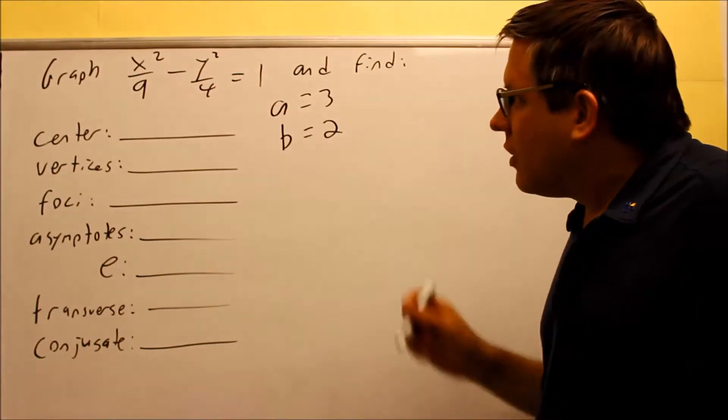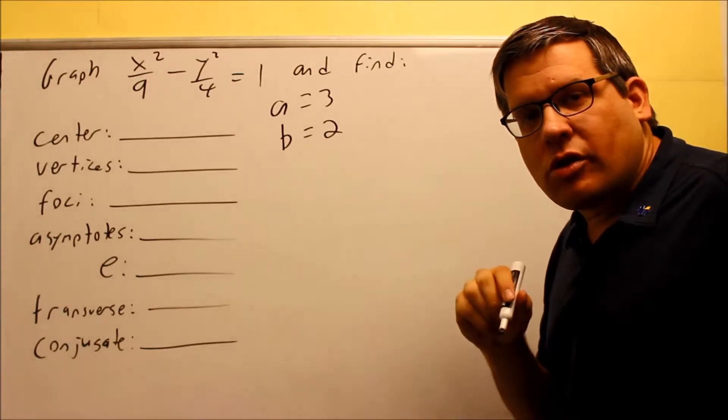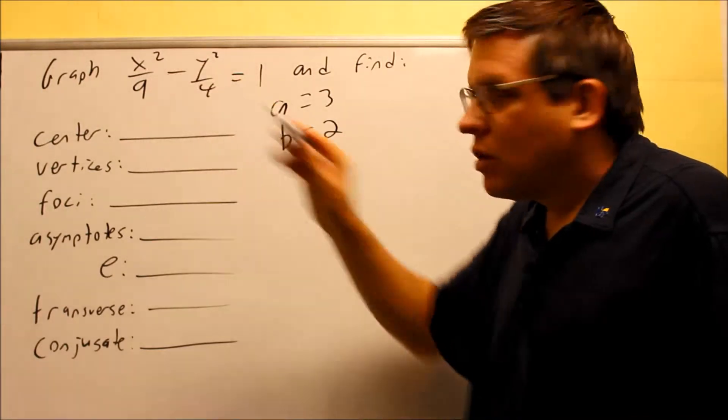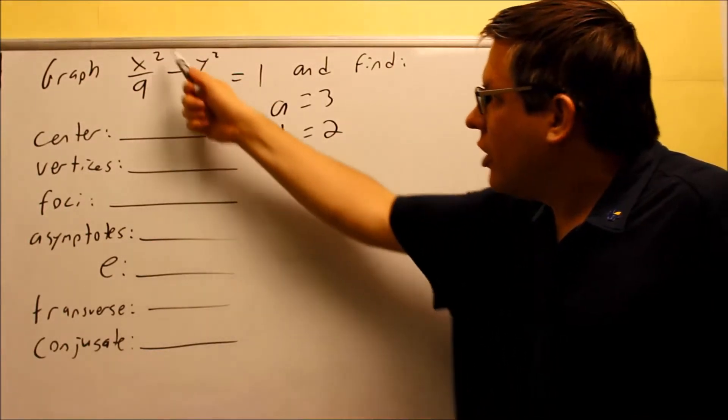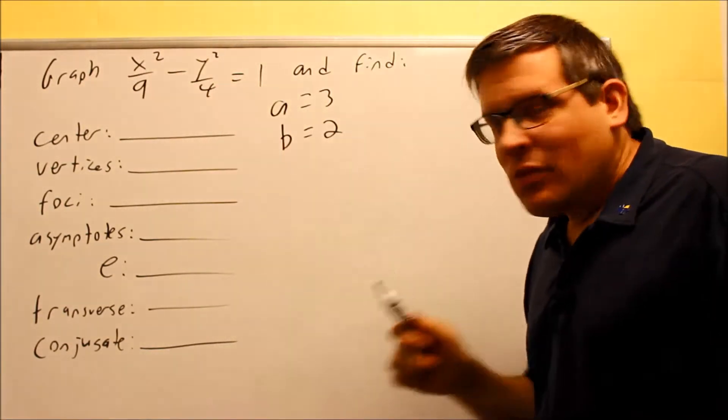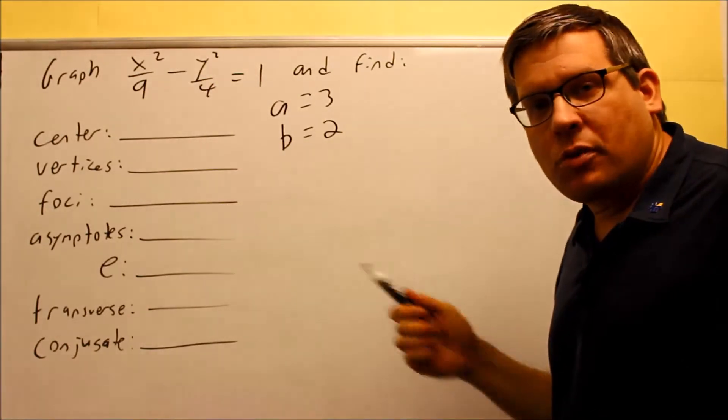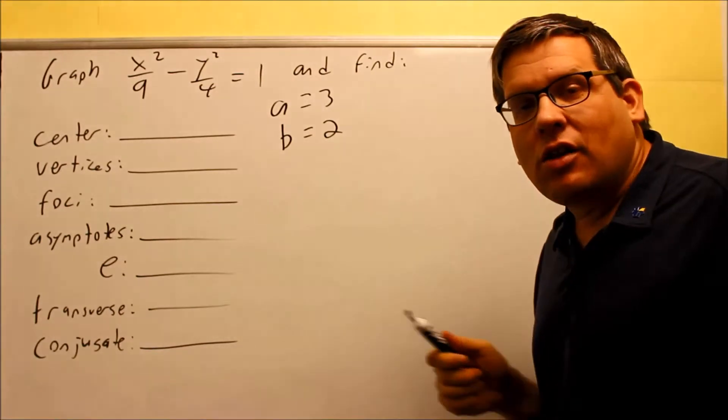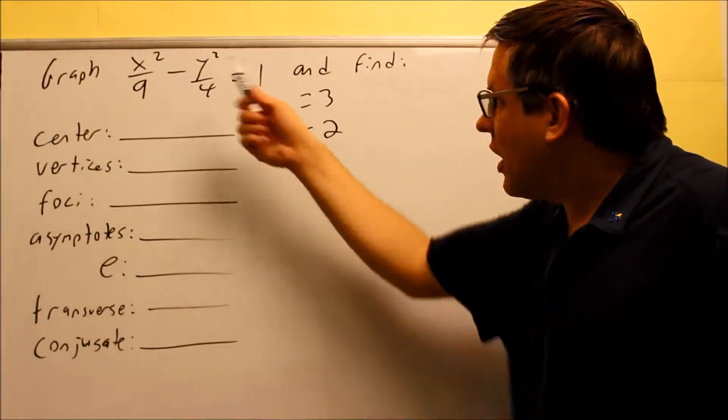What tells you whether it opens up sideways or up and down is whatever letter comes first there. In the positive fraction, if that's an x it opens up sideways. If a y comes first in front of the minus sign then it opens up and down. In this case, this is one that opens up sideways like this.